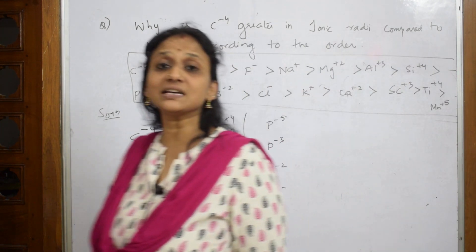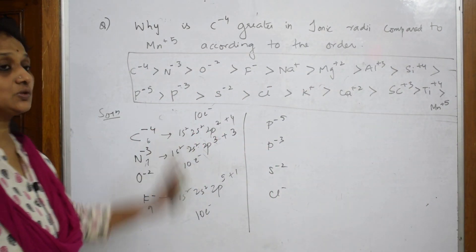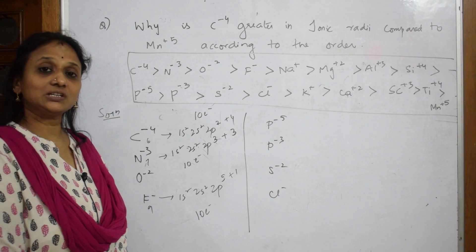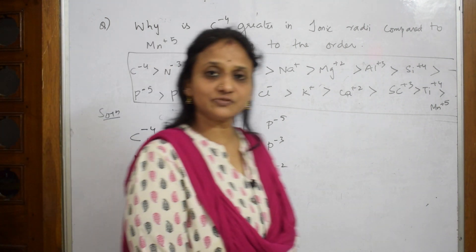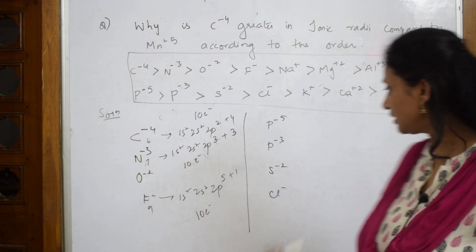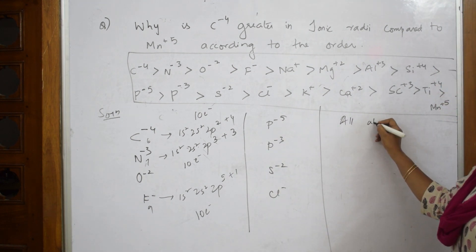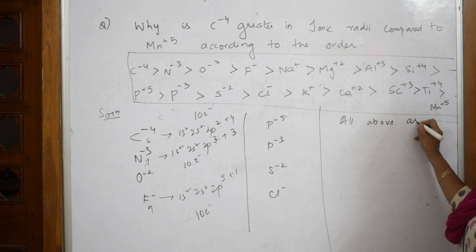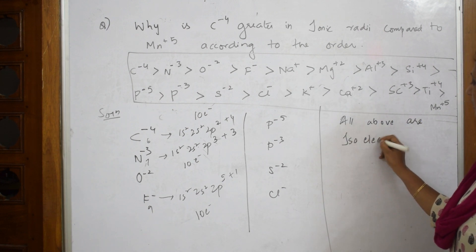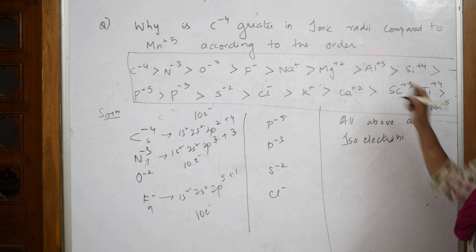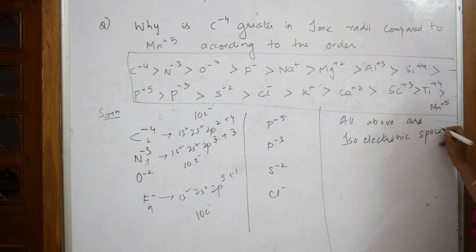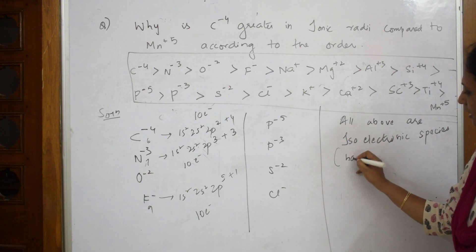So what are these? All these ions are isoelectronic species. Isoelectronic means the ions which have same number of electrons. So immediately write: all above are isoelectronic species having same number of electrons.